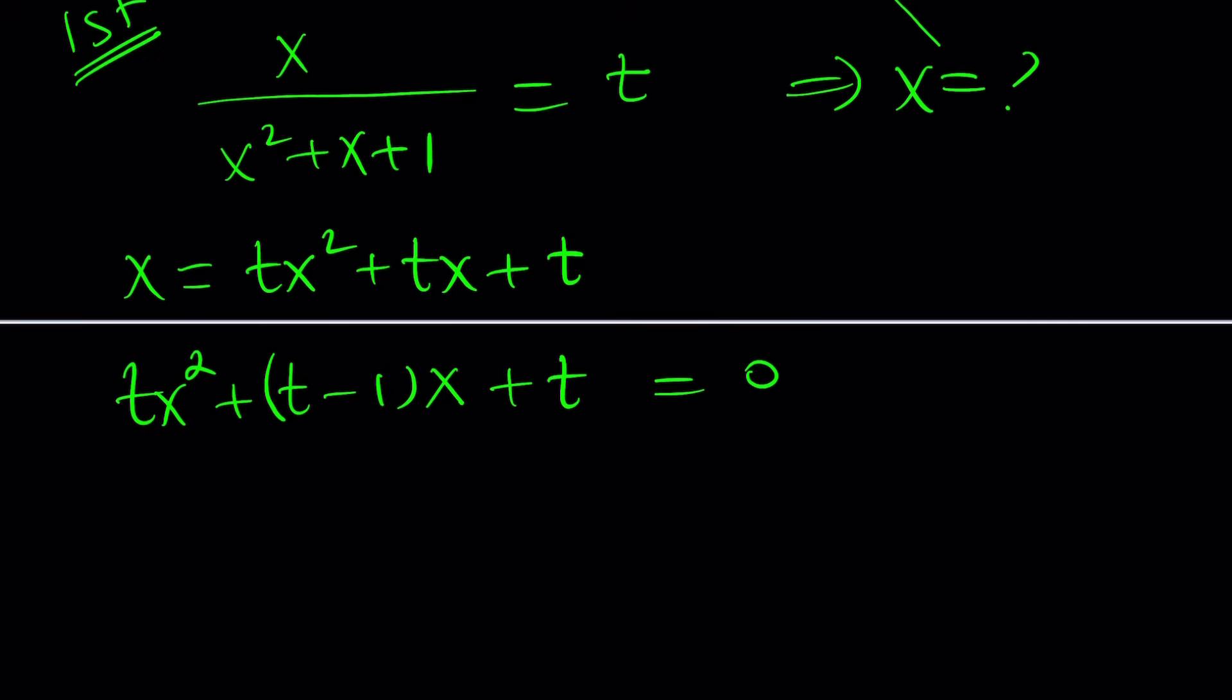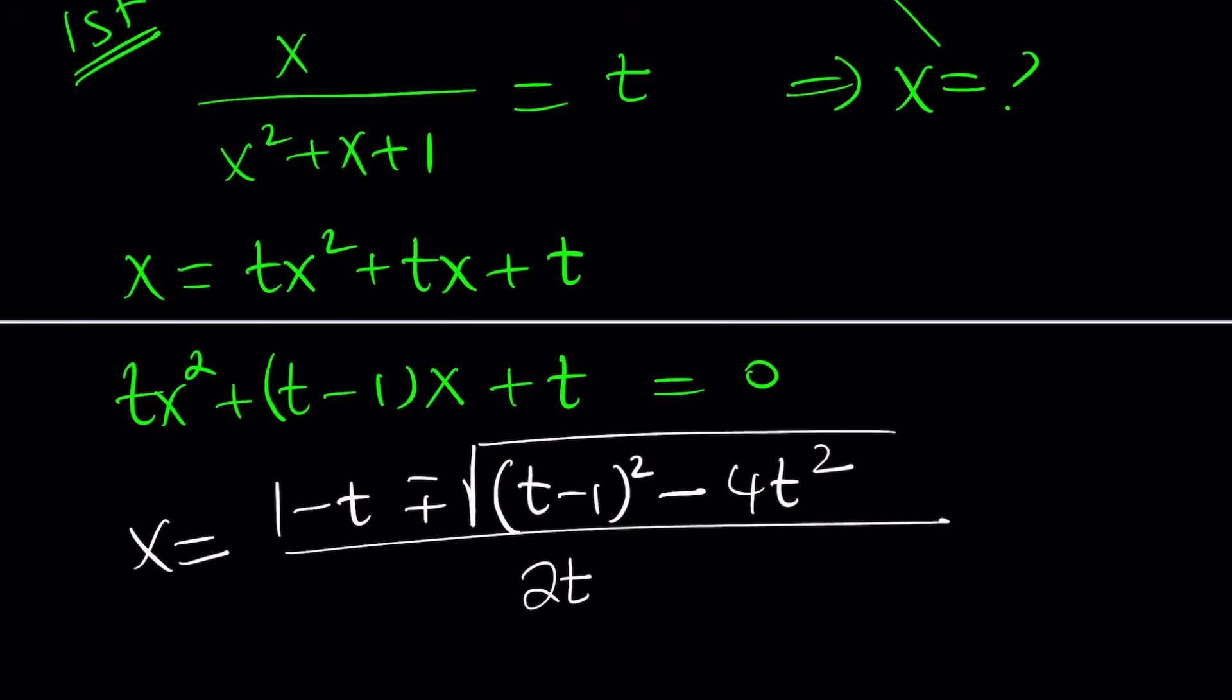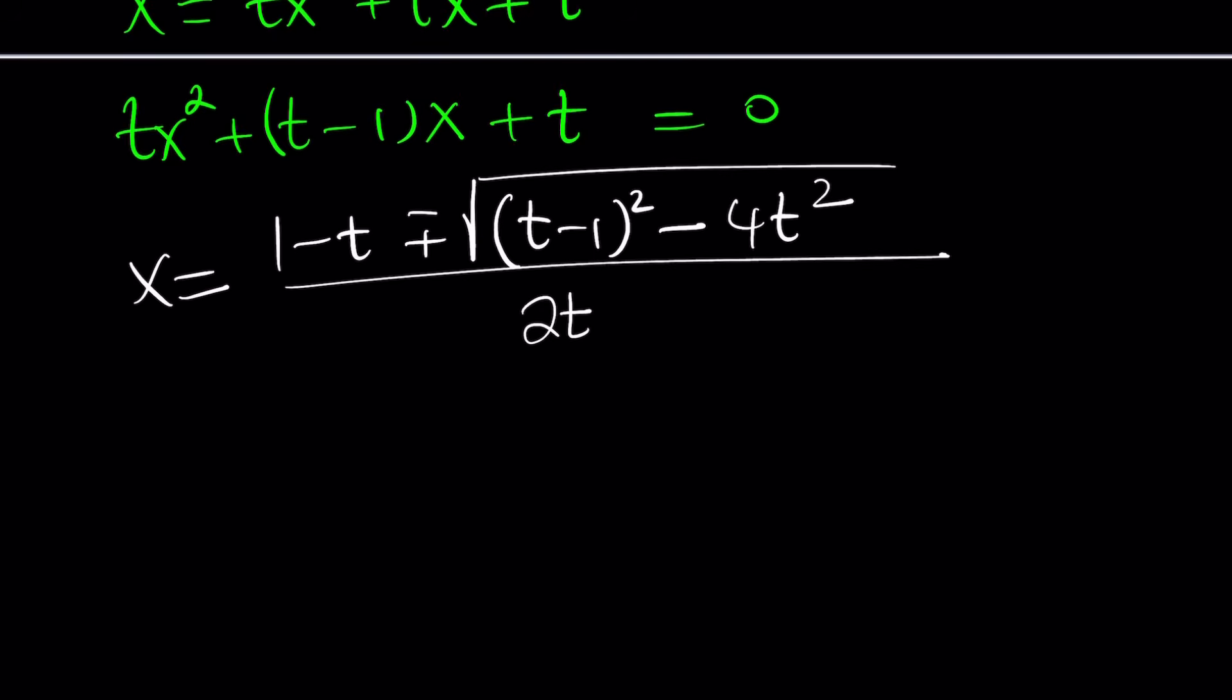It's quadratic in x and we're trying to solve for x, so that makes sense. Let's go ahead and solve it using the quadratic formula. So the quadratic formula says negative b plus minus the square root of b squared minus 4ac, and 4ac would be 4t squared. Awesome. Let's go ahead and divide that whole thing by 2a, which is 2t.